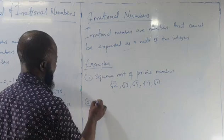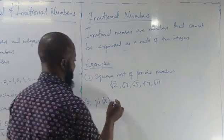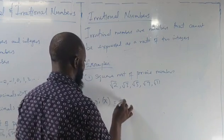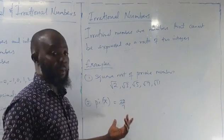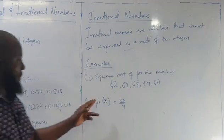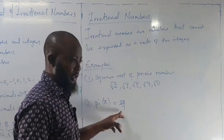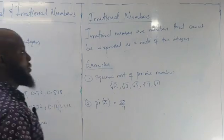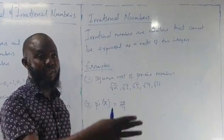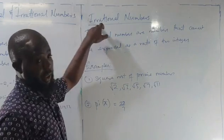The second example is pi (π). The value of pi is approximately 22 over 7, which looks like an improper fraction, and we said improper fractions are under rational numbers. But if you use a calculator to divide it, you will not get terminating decimals or recurring decimals — the digits will continue infinitely without ending. That is why pi is not a rational number; it is an irrational number.